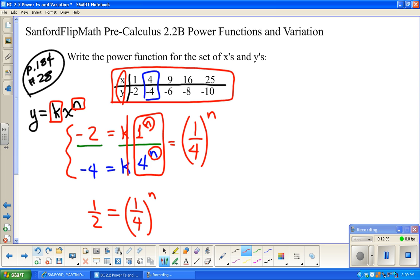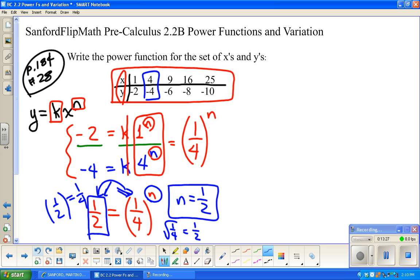The question now is, what power did we raise 1 fourth to to get 1 half? What you may realize is that 1 half squared is 1 fourth. There's a more technical way to do this, but you're going to be better off just eyeballing this. The square root of 1 fourth is 1 half. That's the same thing as 1 fourth to the 1 half power. So, n is 1 half.